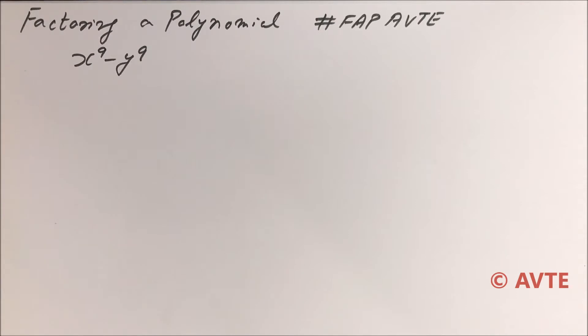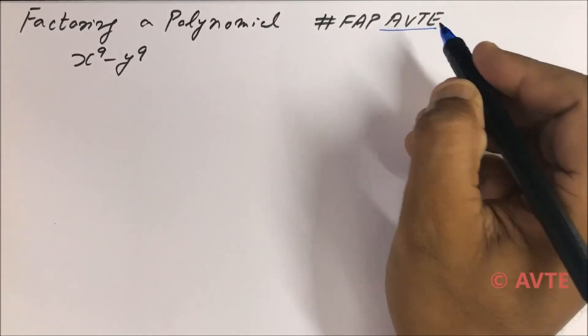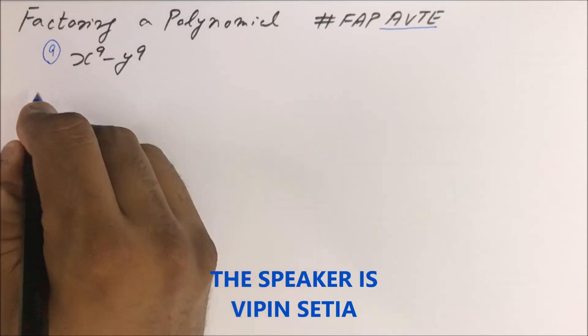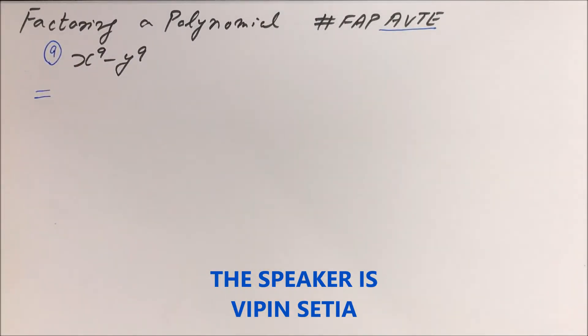Hello friends, welcome to the series of factoring a polynomial in the channel AVTE. Hashtag FAPE. This is question number nine: x raised to the power 9 minus y raised to power 9. So how do you open this?